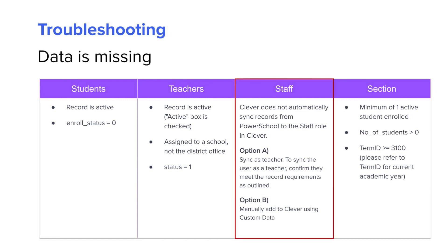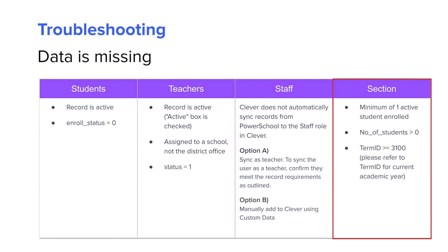Clever does not automatically sync non-instructional staff. If you wish to sync these users, they can be added to Clever manually using our custom data feature, or the user will be synced to Clever if updated in PowerSchool to meet all the teacher requirements. For a section to sync, it must have a term ID corresponding to the current school year and have a minimum of one active student enrolled. Once these requirements are met, the section will display in Clever.